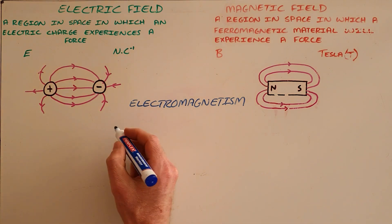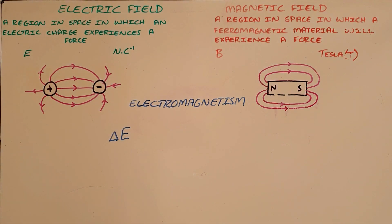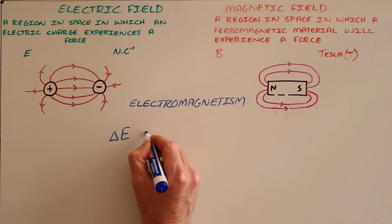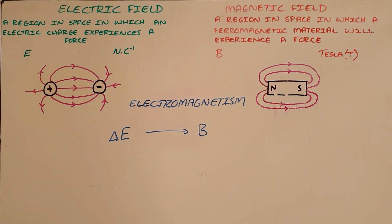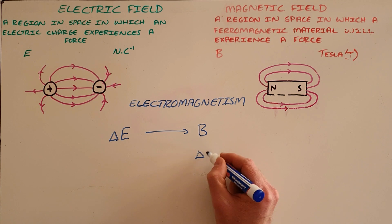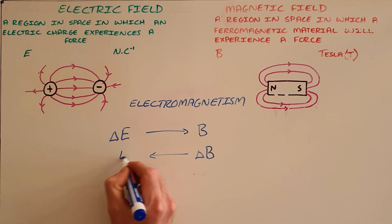And that way is that when you have a changing electric field, so we use the Greek letter delta here to show that we have a changing electric field, that will automatically produce a magnetic field perpendicular to it, and that relation goes both ways, where a changing magnetic field would in turn produce an electric field.